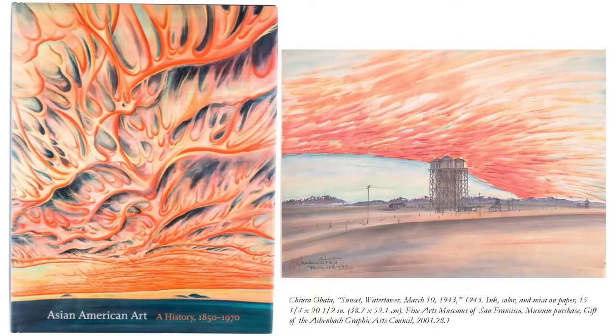Of course, fall of 2016 was also the moment when Trump was elected. I remember teaching, the week before the election, the history of internment and work made in the internment camps. The cover image of 'Asian American Art History' — a spectacular flaming sky by Chiura Obata, which is really what the sunset looks like some days in California over the ocean — is then adapted to show the sky literally on fire after Obata is interned.